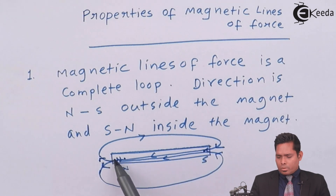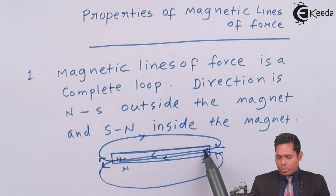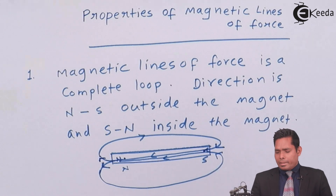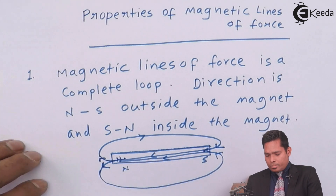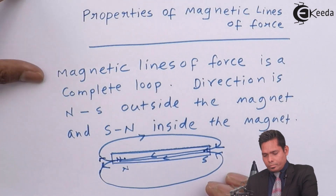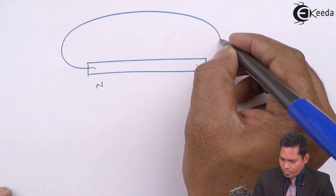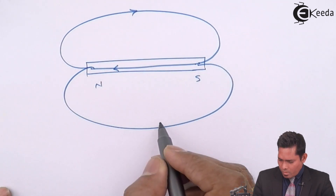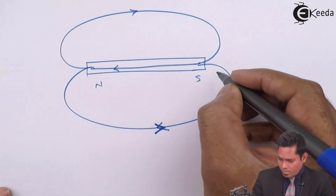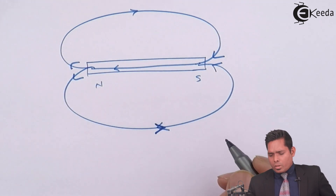The direction is from north pole to south pole outside and from south pole to north pole inside. This is how the magnetic lines of force are formed. This is how the lines of force are drawn.